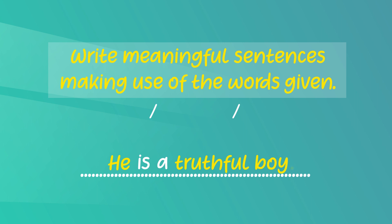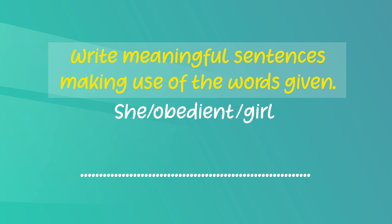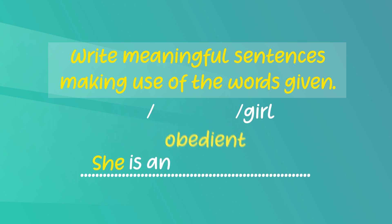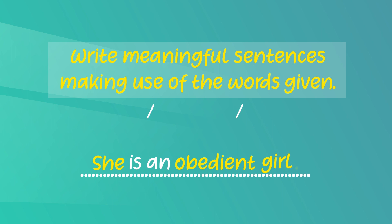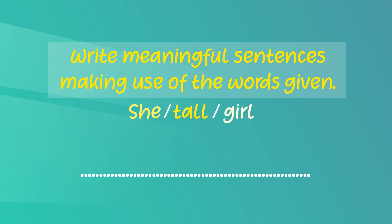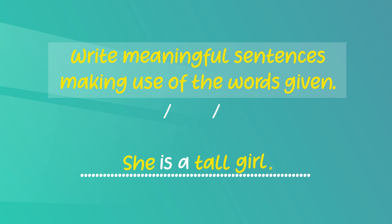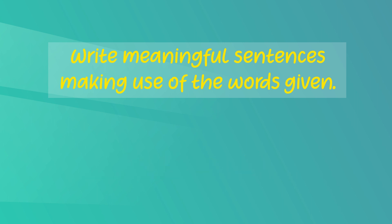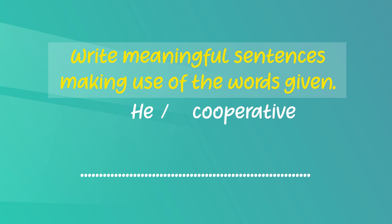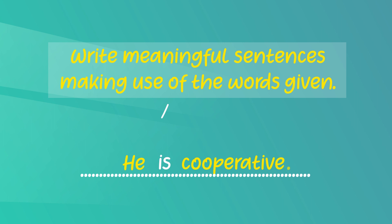Don't forget to put 'a' before 'truthful boy.' Now the third one — you have three words: she, obedient, girl. The sentence is: She is an obedient girl. Why 'an' this time? Because 'obedient' starts with a vowel sound. The fourth one: she, tall, girl — She is a tall girl. And the last one: he, cooperative — He is cooperative.